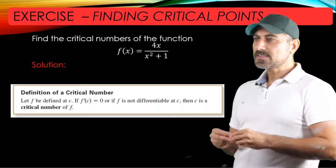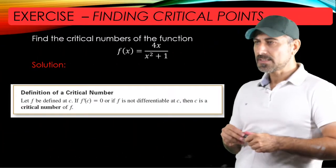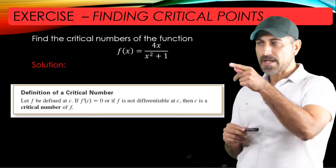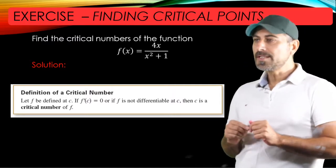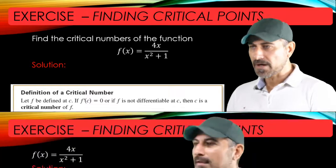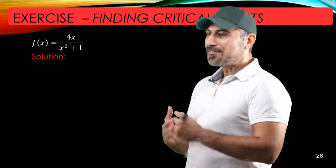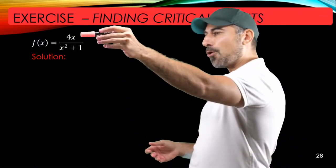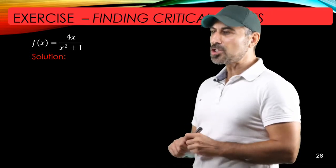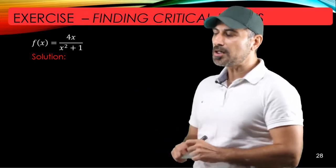In the next step we're going to look for points that make f prime either zero or undefined. And now let's go ahead and find f prime. Since we have the quotient of two functions, we're going to use the quotient rule to take the derivative of f.